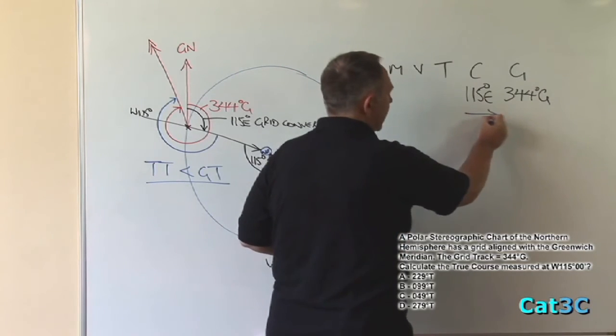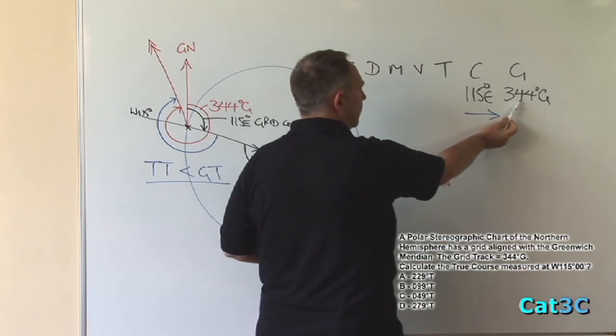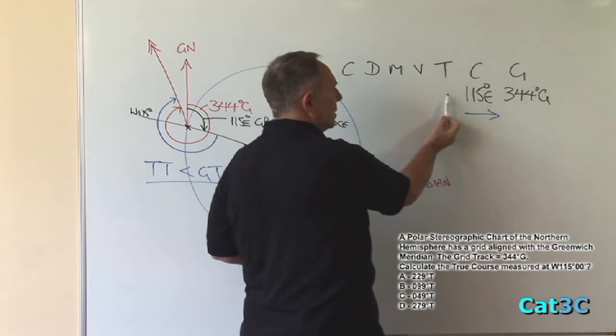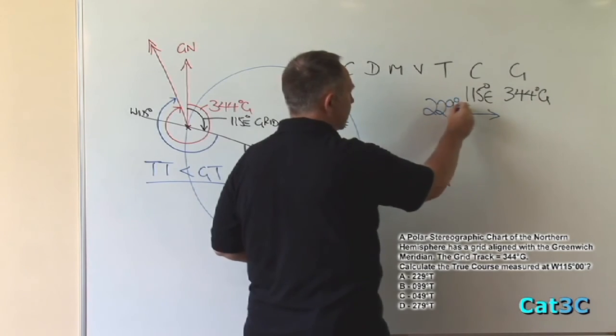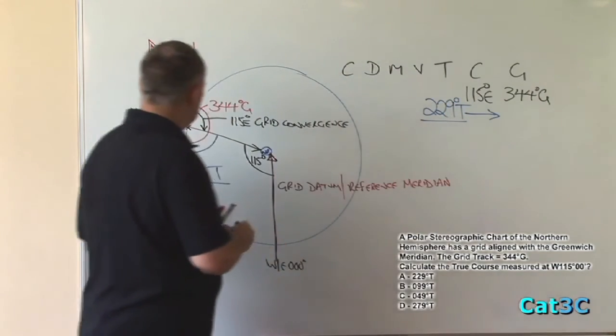East is that direction, which means that's the larger number. The true track will be less than 344 by 115, which gives me 229 degrees true.